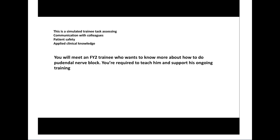The indications for pudendal nerve block are: as a method of regional analgesia in cases of severe pain in the second stage of labor, if we are going to do an instrumental delivery, or if we are going to do a perineal repair. Sometimes it is also used for minor procedures in the perineal area, such as removal of a cyst.